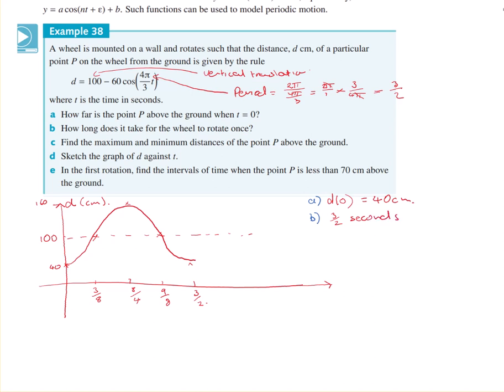Find the maximum and minimum distances of the point P above the ground. Well, the maximum is always the vertical translation plus the amplitude. So your maximum is 100 plus 60 equals 160 centimeters. And the minimum is the vertical translation minus the amplitude. So that's 40 centimeters.